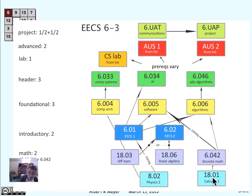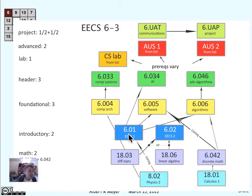So what does it mean? Let's look at this vertex corresponding to the first term calculus class, 1801, and there's an edge that points to 6042. That's because if you look at the catalog, 6042 lists 1801 as a prerequisite. If you look at the introductory algorithms class 6006, you'll find, if you look in the catalog, that it has two listed prerequisites: 6042 and 601. The fact that they're explicitly listed in the catalog as prerequisites is why there's an arrow from 601 to 6006, and from 6042 to 6006.